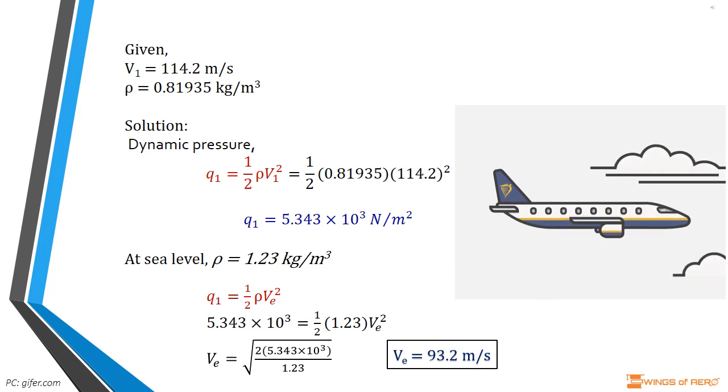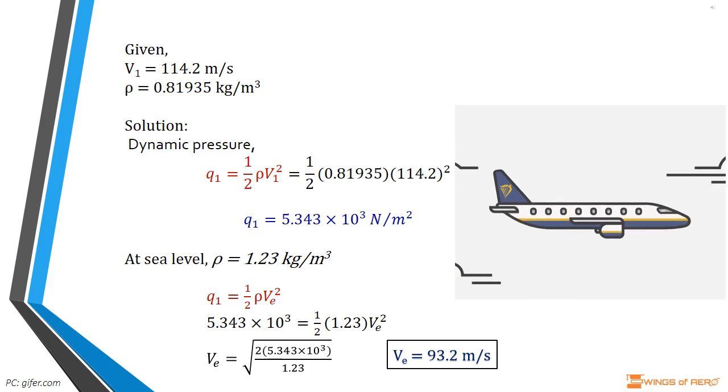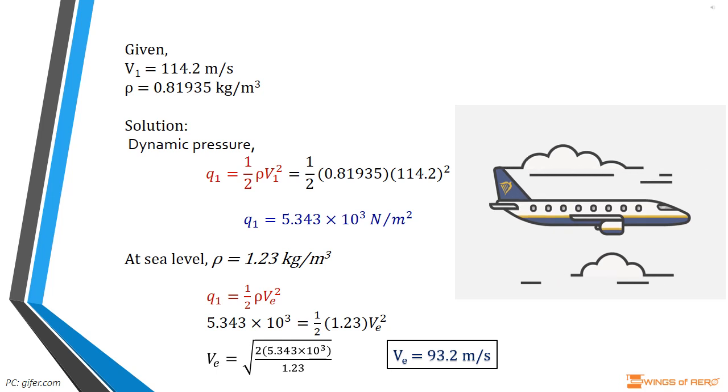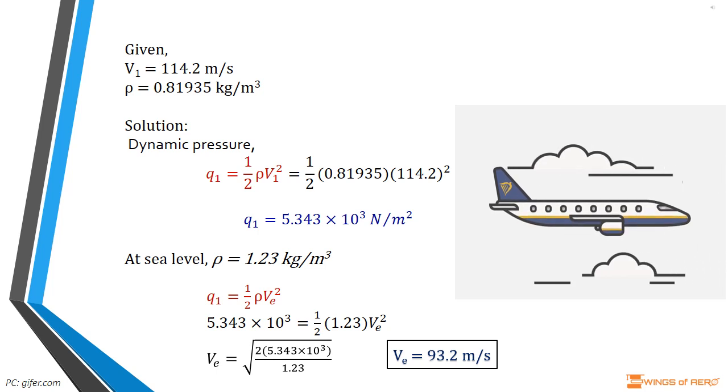where the values of ρ and V are given. Now, substitute those values in this equation and simplify we get dynamic pressure Q₁ = 5.343 × 10³ Newton per meter square.